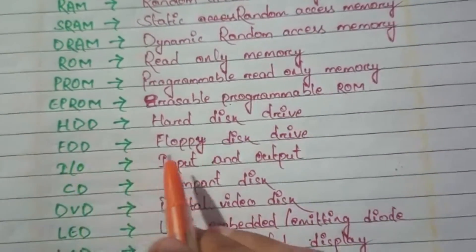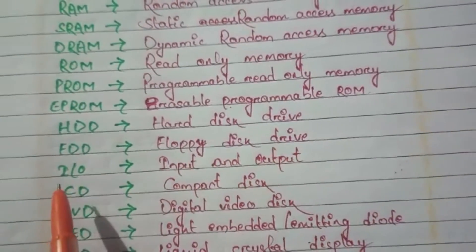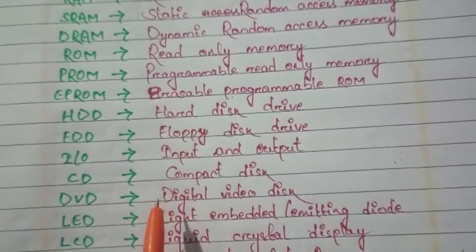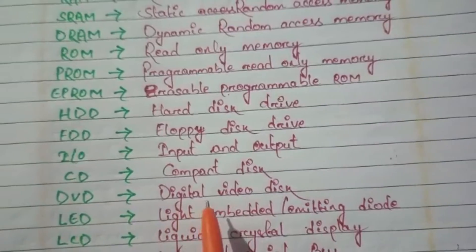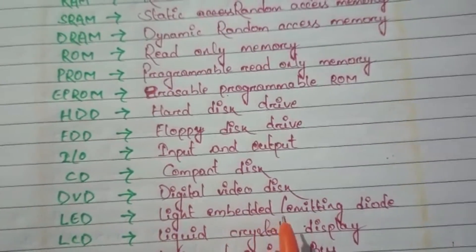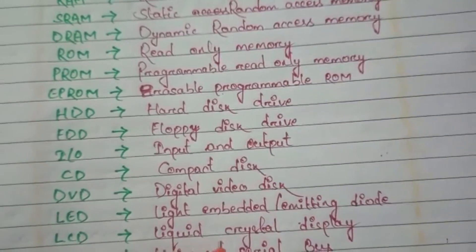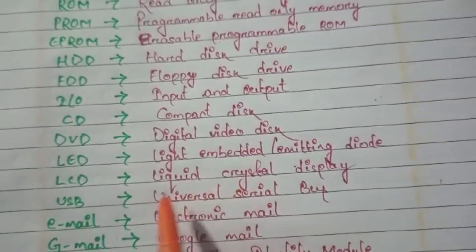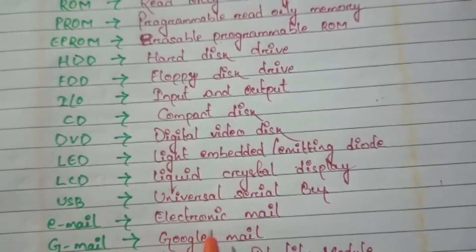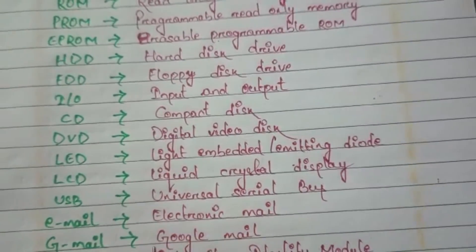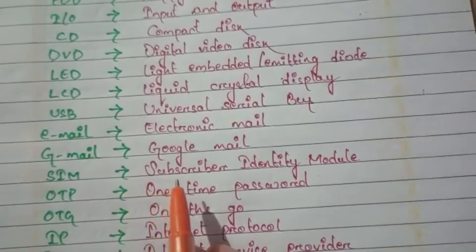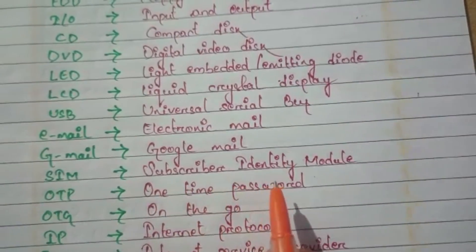FDD - Floppy Disk Drive. I/O - Input and Output. CD - Compact Disk. DVD - Digital Video Disk. LED - Light Emitting Diode. LCD - Liquid Crystal Display. USB - Universal Serial Bus. Email - Electronic Mail. Gmail - Google Mail. SIM - Subscriber Identity Module.